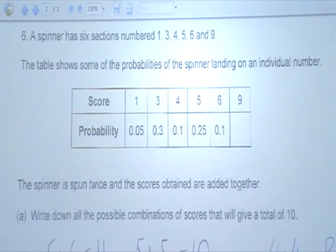Right, let's look at a question. This is about a spinner. It has six sections, numbered 1, 3, 4, 5, 6, and 9.